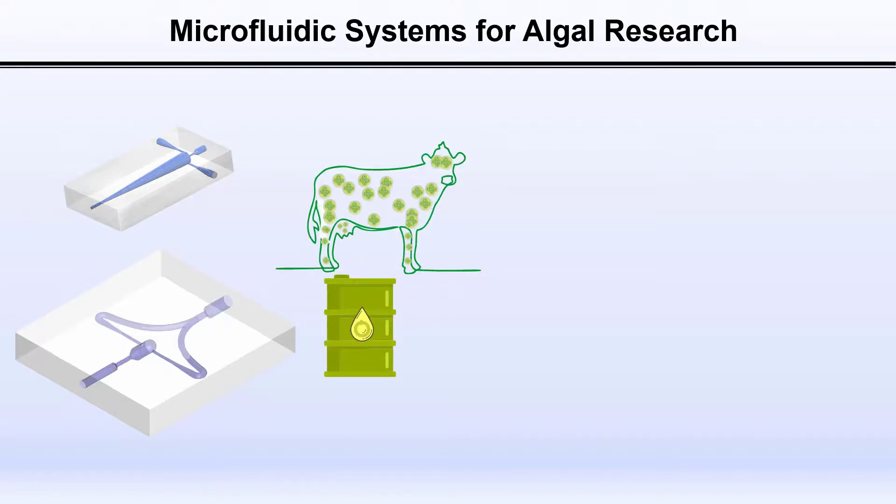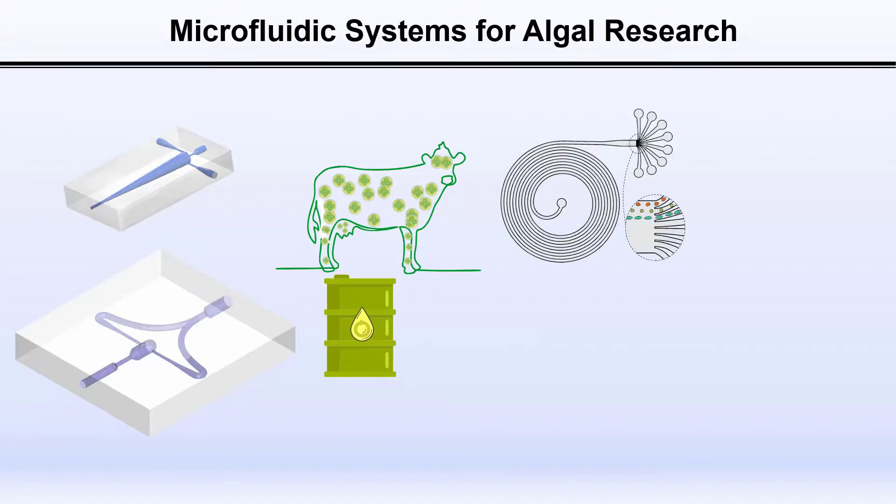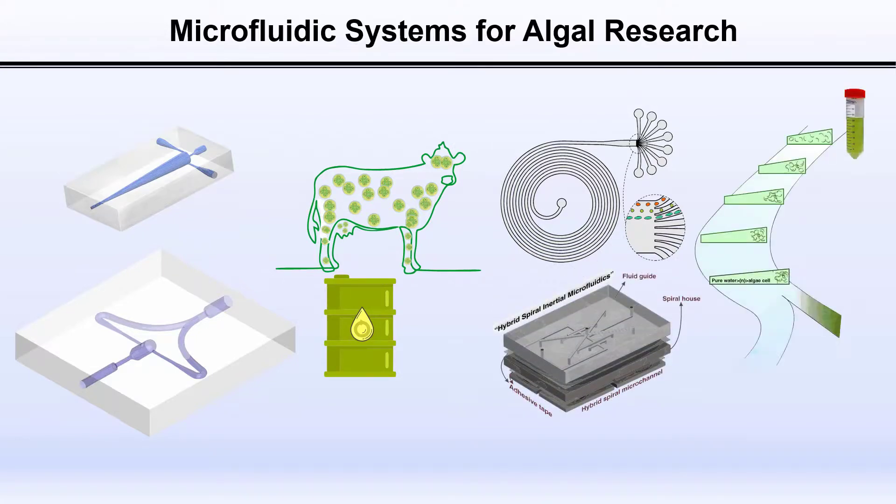We are also able to separate different algal cells based on their shape and size. Moreover, we are capable of concentrating and harvesting them efficiently.